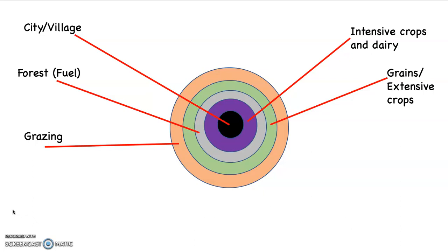And then the last concentric ring going around this system would be grazing of cattle, sheep, goats. The reason they're on the farthest out ring from the city is simply this. They transport themselves to the city. At that point, they would walk into the city and then they would be slaughtered at that point.